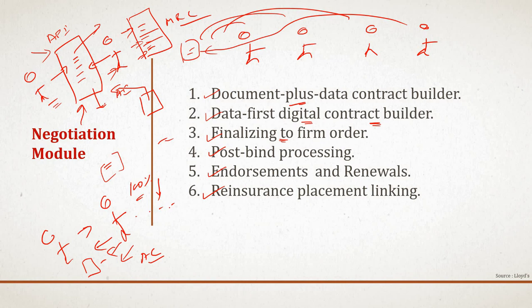The platform will automatically calculate taxes at bind if enough structured data is available. Post-bind processing means that once binding is completed, the platform provides automatic updates to all relevant participants about the signed lines, and produces automated accounting and settlement records for downstream processing.